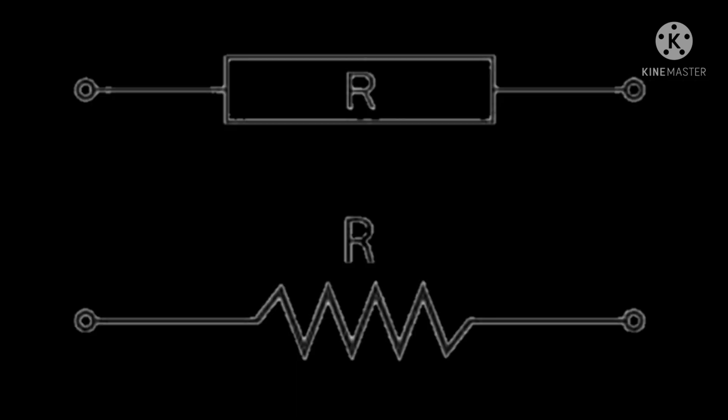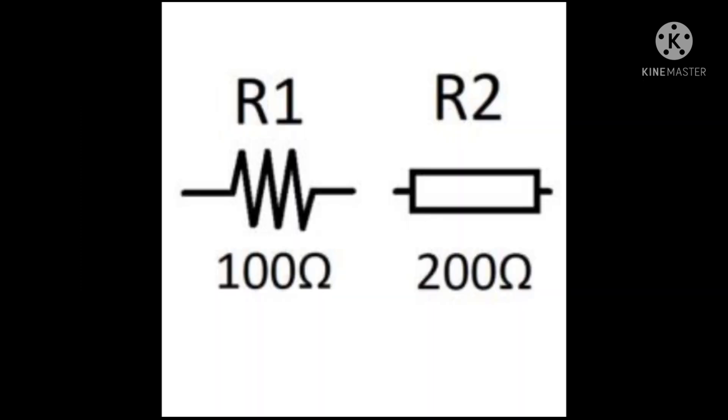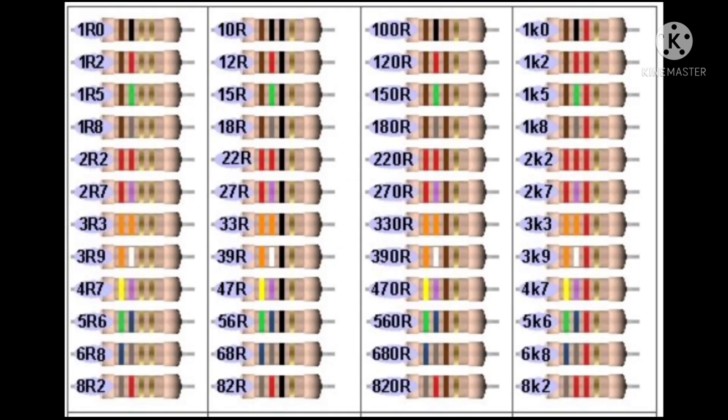A resistor is said to be a fixed resistor if its value is fixed. The value of a fixed resistor can't be varied like a variable resistor, as its value is determined at the time of manufacturing itself. The following figures represent the symbol of a fixed resistor.